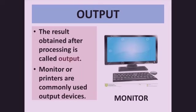This is called Processing. Third is Output. The result obtained after processing is called Output. First we input data with the keyboard; that data goes as a command into the CPU. The CPU processes it and gives us output, which we can see with the help of an output device such as a monitor or printer.